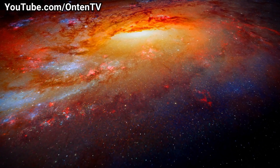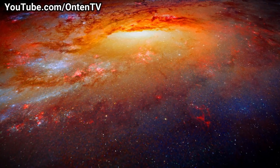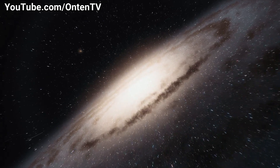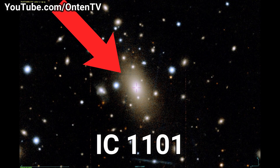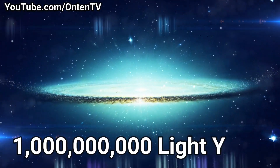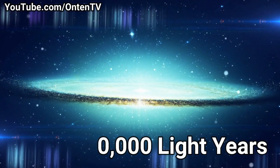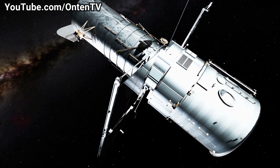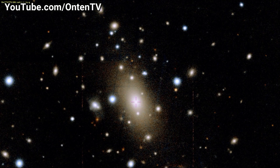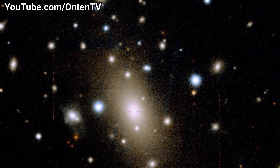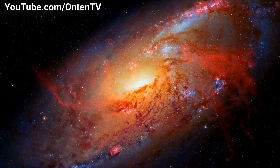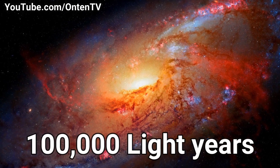These galaxies are so huge you can't even imagine it. The biggest galaxy is called IC 1101, and it is 1 billion light years away from us. This is a real picture taken with the Hubble Space Telescope. It looks like just one star, but it's so huge and has so many stars that it appears as one point of light. The diameter of this galaxy is 6 million light years across.